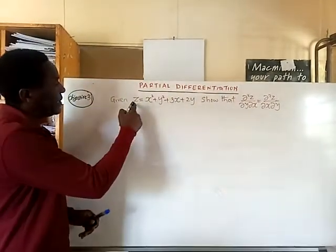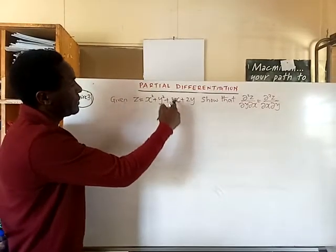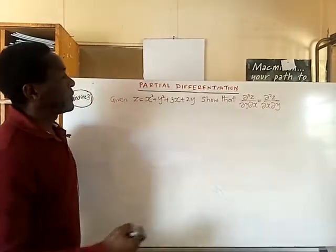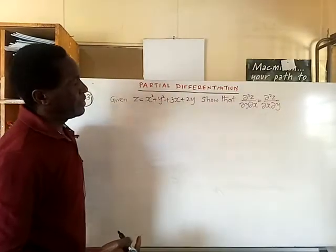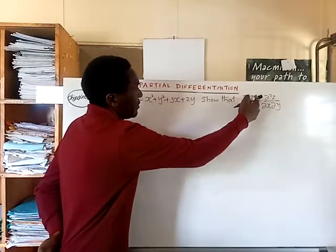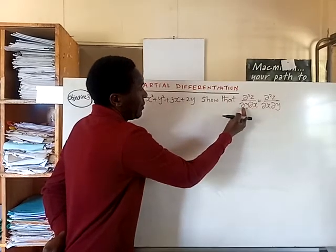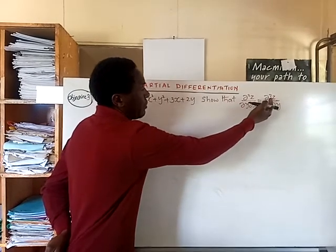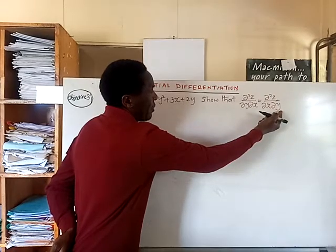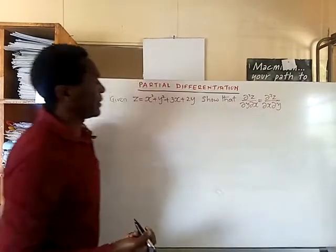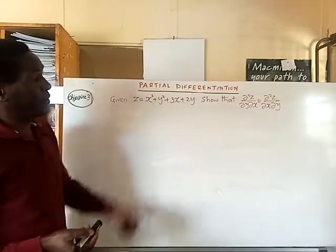We are given a function z = x² + y² + 3x + 2y. We are supposed to show that the second partial derivative of z with respect to x first, then with respect to y, is equal to the second partial derivative of z first with respect to y, then with respect to x. We are only supposed to show this because it is already known.